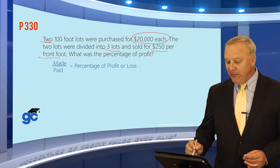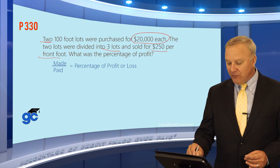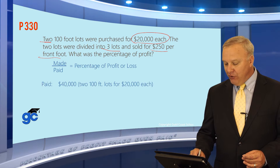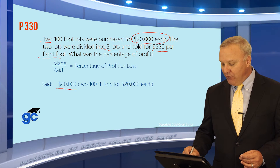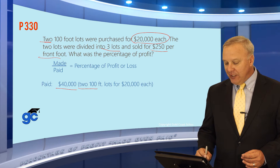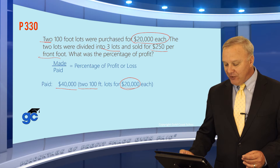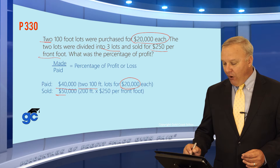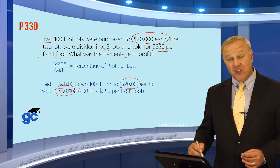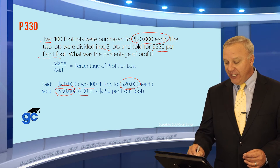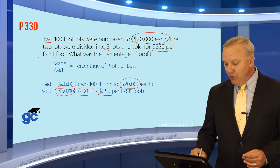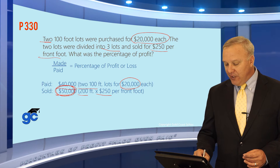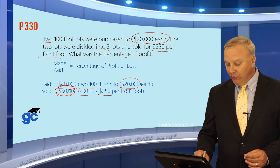In this case, the person purchased two 100-foot lots for $20,000 each. So two times $20,000 tells us that they paid $40,000 for these lots. They then sold them for $250 per front foot. This is where the measurement is important — we know that they were 100 feet each. So 200 feet times $250 per front foot means this property sold for $50,000.